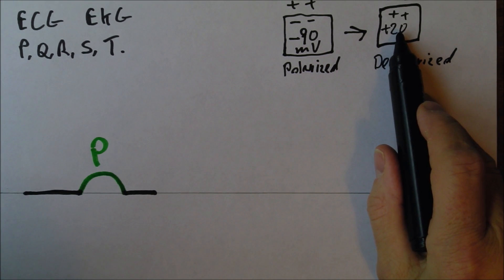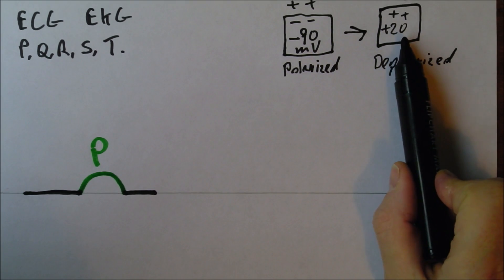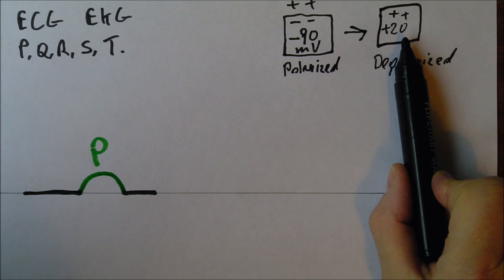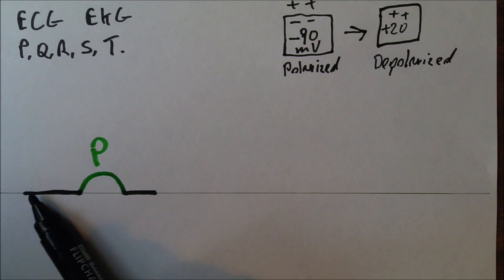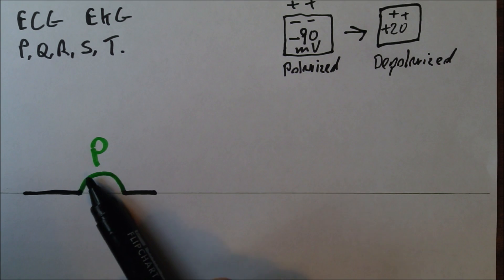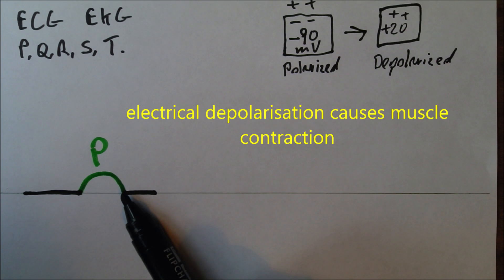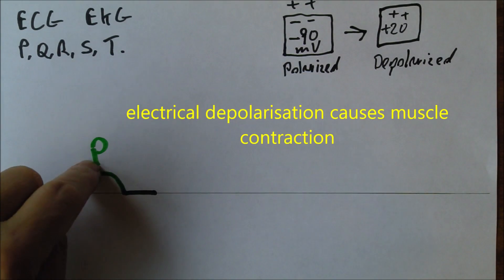And the important thing about this is that it's the change from being polarised to being depolarised that initiates the muscle contraction. That's what triggers the initial muscle contraction. So the muscle sitting there in a polarised state then it depolarises and that's what stimulates the contraction. Now that's the P wave.